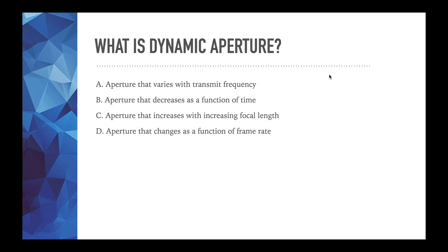All right, let's get to the last question. So what is dynamic aperture? Let's just go through each of these and we'll see where we end up. Aperture that varies with transmit frequency. So this is saying a probe that changes the frequency to dynamically change the aperture. Or aperture that decreases as a function of time. So as time goes on, the aperture changes. We have aperture that increases with increasing focal length. And we have aperture that changes as a function of frame rate.